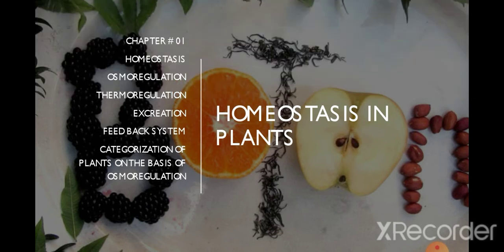The feedback system is a check and balance mechanism — we check the changes and balance or maintain them. Then we categorize and classify the plants on the basis of osmoregulation, and we also discuss the process of excretion in different ways, including all the things a plant has to excrete out, and why a plant doesn't have a problem in the process of excretion.